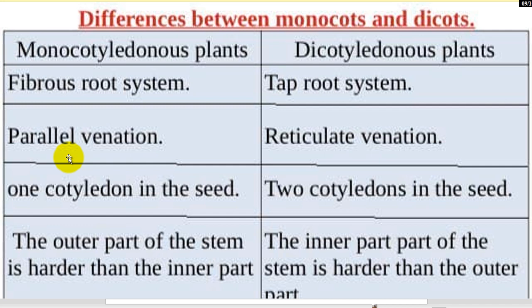Distinguish — monocots: fibrous root system, parallel venation, one cotyledon. Outer part of the stem is harder than the inner part — that is, the inner part of the stem is harder than the outer part.